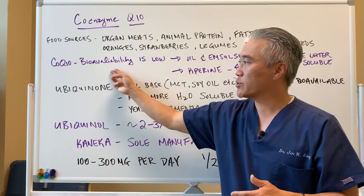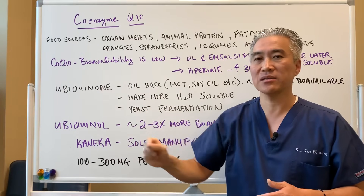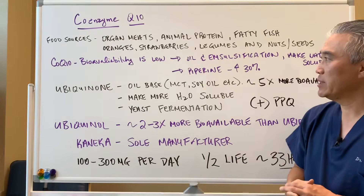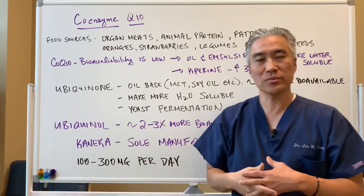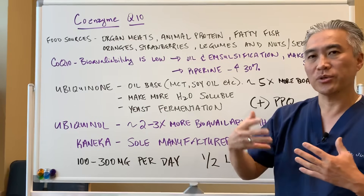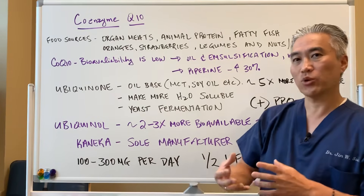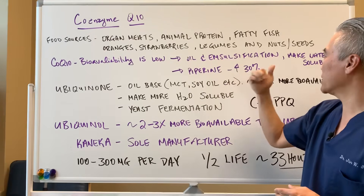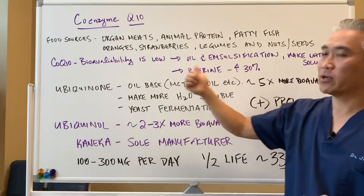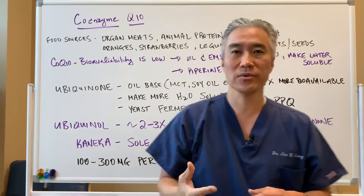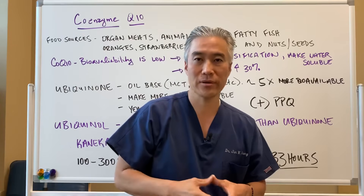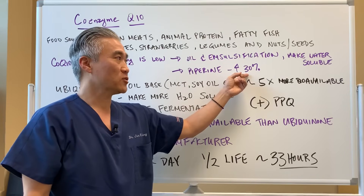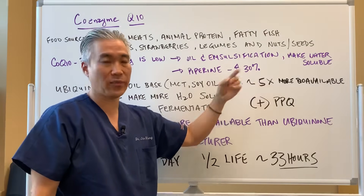The CoQ10 bioavailability is quite low, so it's not readily absorbed in our system. The way we can increase absorption is to emulsify or use an oil to help absorption in the gut — either through an oil or emulsification process, or by making CoQ10 more water-soluble so it can be absorbed easier in our GI tract. You can also use piperine, which increases bioavailability by 30%.